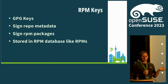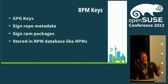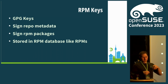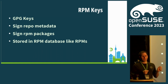So first, what are RPM keys actually? Essentially, just GPG keys. They are used to sign repo metadata as well as the actual RPM packages. And if you're lucky, the same key is used to sign the metadata and the package — because especially for third-party repos, you get really interesting constellations. They are stored in the RPM database like RPMs, so the actual management is done via the RPM command, which is not really documented anywhere. It was not easy to find out all of that.